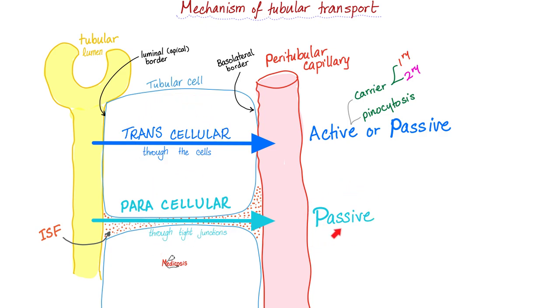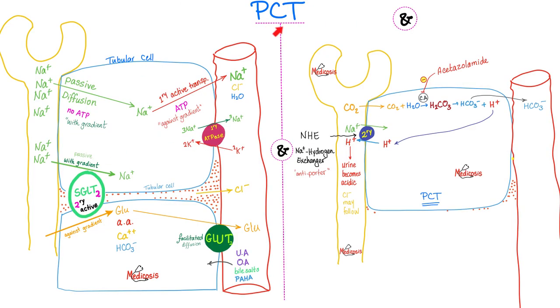The mechanisms of tubular transport are either transcellular or paracellular. Paracellular is always passive. Transcellular could be active or passive. When it's active, it could be primary active transport, usually at the basolateral border, or secondary active transport, usually at the apical or luminal border. This is the normal physiology of the proximal convoluted tubule. It basically reabsorbs all of the good stuff, and it dumps some waste. It also regulates acid-base balance in your body.